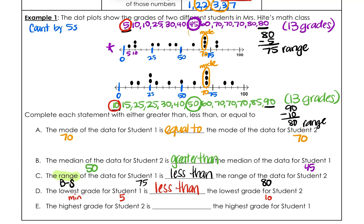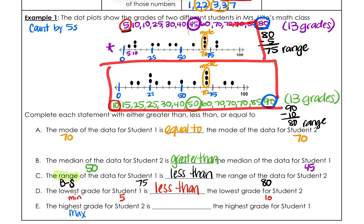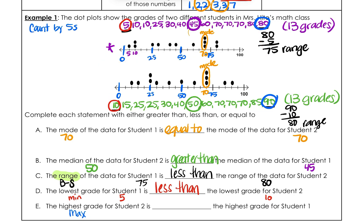Finally, the maximum or highest grade. For student one, the maximum is 80. For student two, it's 90. You really have to be careful because sometimes they say student one first and sometimes student two first — so check which one they're asking about. For student two, the maximum was 90, and for student one it was 80. So 90 is greater than 80.